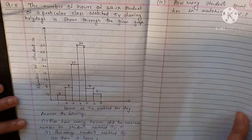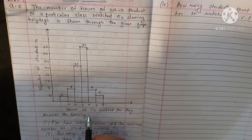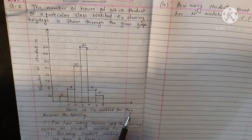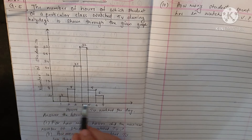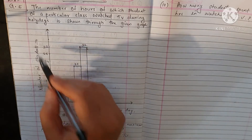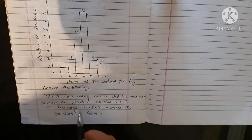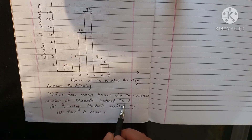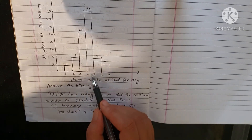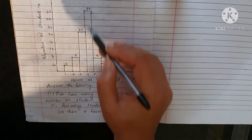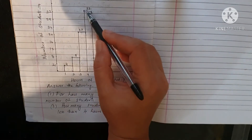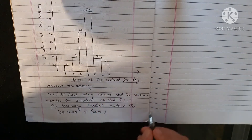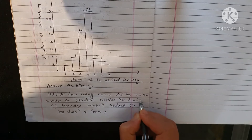For the first question, we need to find the number of students who watched TV for a certain number of hours.